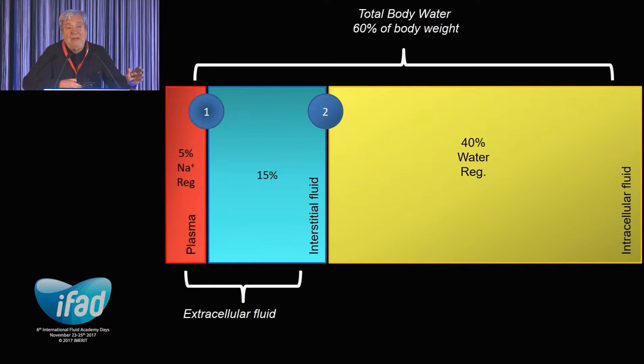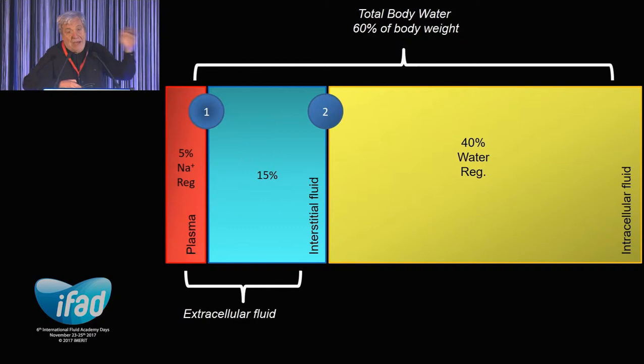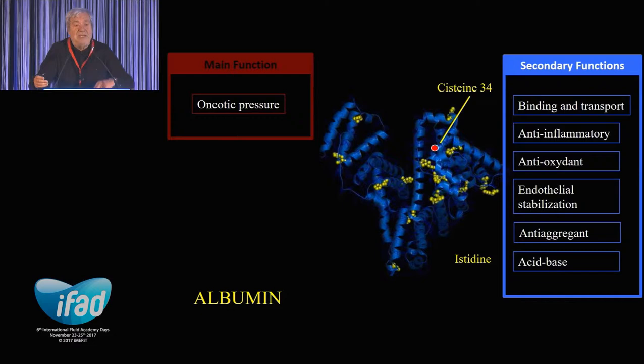This is the so-called oncotic power of albumin. In septic shock, I don't have any real capillary barrier. I have some, probably, in some part of the body, but basically there's no problem. Albumin is a complex molecule. I told you about the oncotic power. The weight is about 65,000, and it has a lot of properties which are very good during septic shock or septic states, because it has some antioxidant properties, helps endothelial stabilization, has some anti-aggregant properties, it's important in acid-base equilibrium, it's a modulator of nitric oxide. There's a lot of properties which are helpful in this condition.